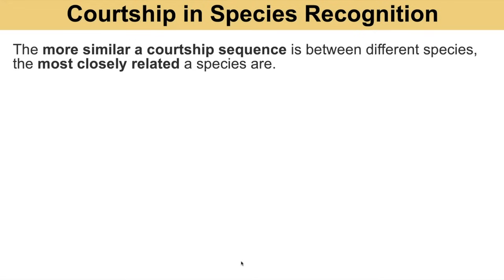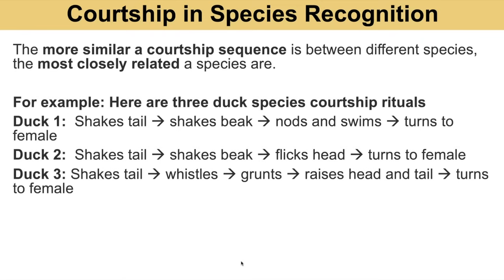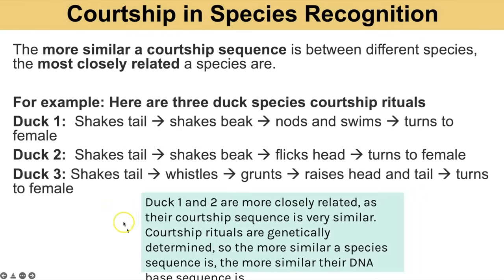Courtship behaviour can also be used to identify how closely related different species are. For example, looking at three ducks and their courtship behaviour sequences, ducks one and two must be more closely related because their sequences are more similar than duck one and three or ducks two and three. Because this behaviour is genetically coded, more similar behaviour sequences suggest more similar DNA base sequences.